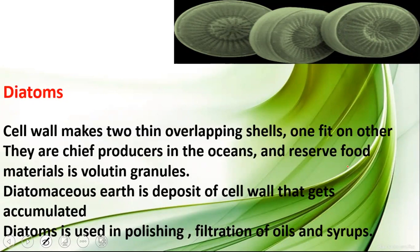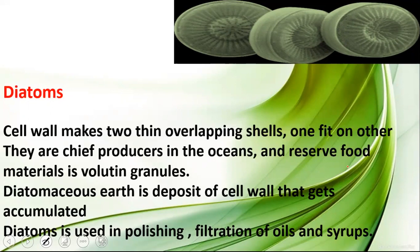Diatomaceous earth is a deposit of diatom cell walls. Because their cell walls are indestructible due to silica, as diatoms decompose at the bottom of water bodies they form layers called diatomaceous earth. Because they are abrasive, they are used in polishing and filtration of oils and syrups, and can even be used for extracting petroleum products under pressure and high temperatures.